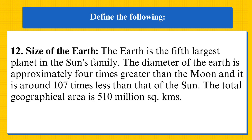Size of the earth: the earth is the fifth largest planet in the sun's family. The diameter of the earth is approximately four times greater than the moon, and it is around 107 times less than that of the sun. The total geographical area is 510 million square kilometers.